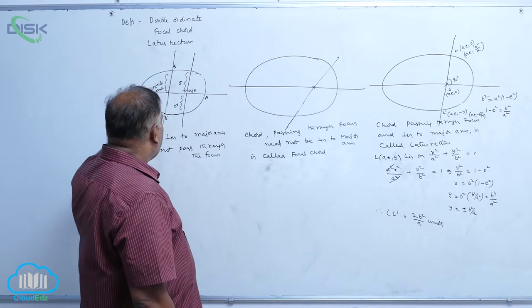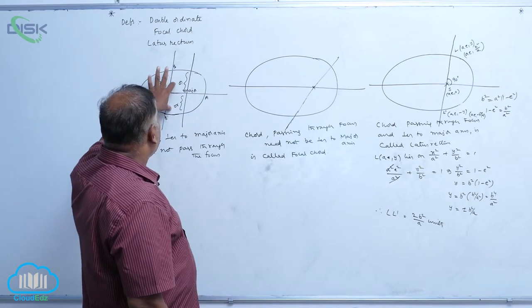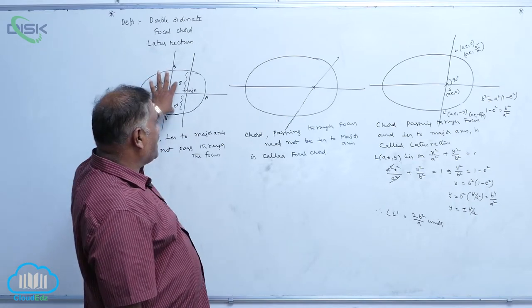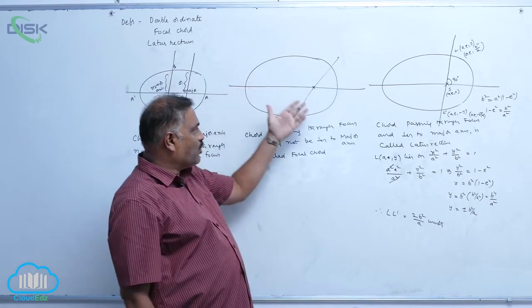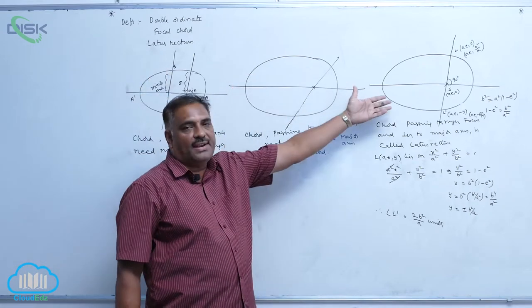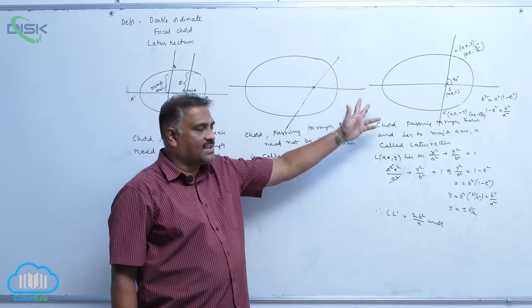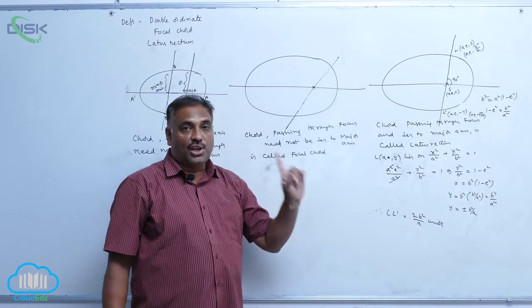So to recap: a chord perpendicular to the major axis is a double ordinate, a chord through the focus is a focal chord, and a chord through the focus and perpendicular to the major axis is the latus rectum.